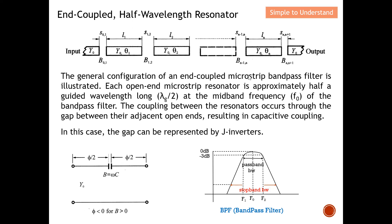Each open-end microstrip line resonator is approximately half a wavelength with reference to the midpoint frequency of the bandpass filter. So basically each microstrip line will have a length of half a wavelength, the same for the rest — all microstrip lines will be half a wavelength with reference to the midpoint frequency.